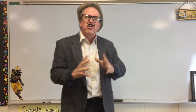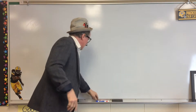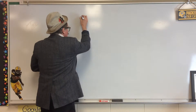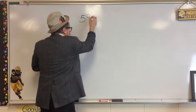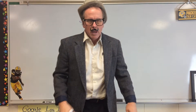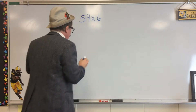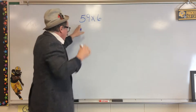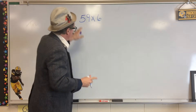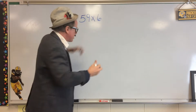I am going to show you how to multiply big numbers, such as something like this: 59 times 6. Now, that's a big number. But I'm going to show you real quickly how we can do that really simply. So we have 59 times 6. I like to call that a 2 by 1 — we have a 2-digit number by a 1-digit number.